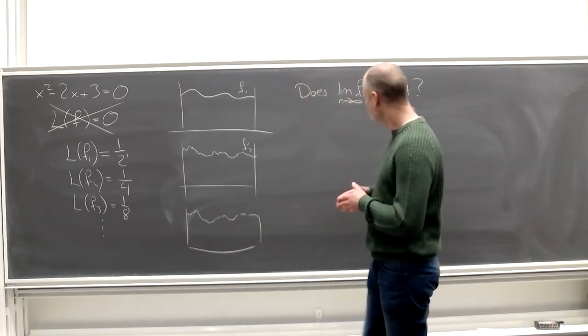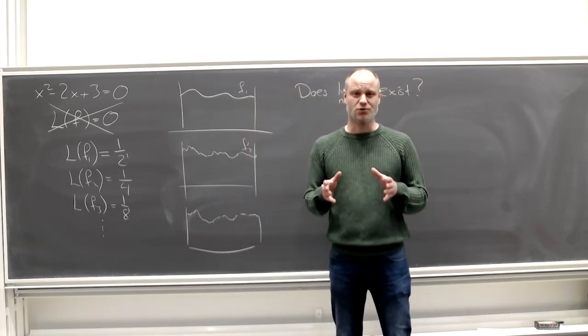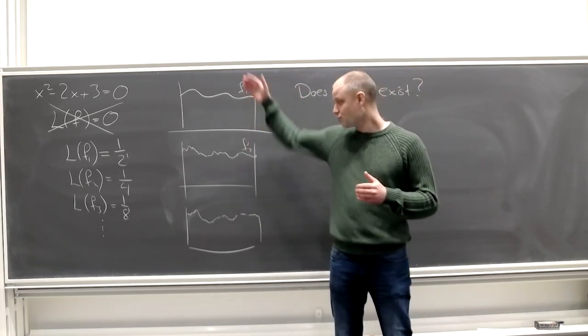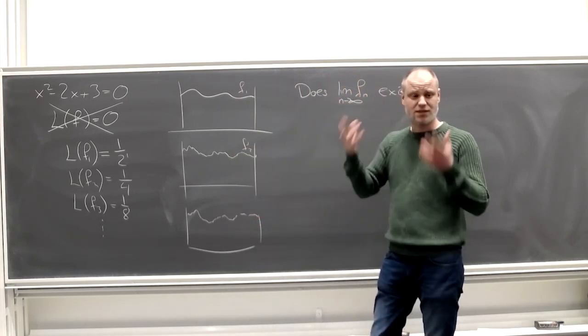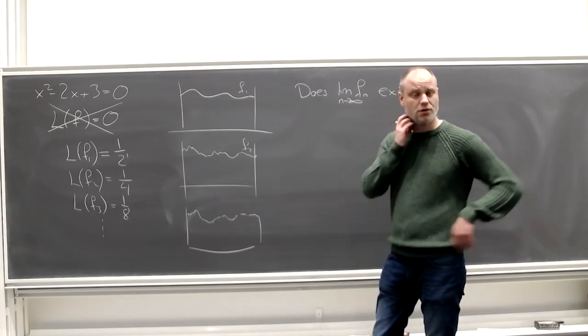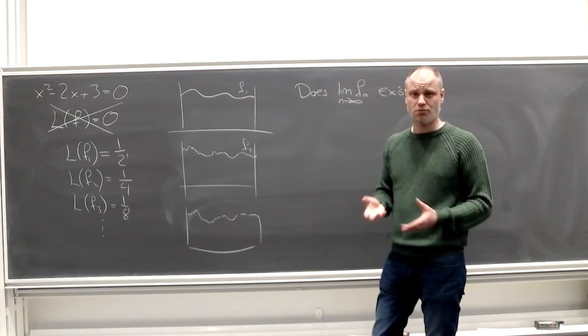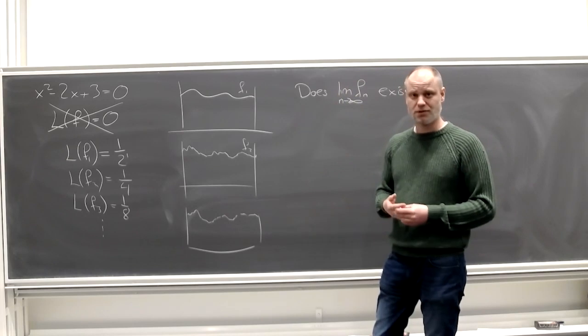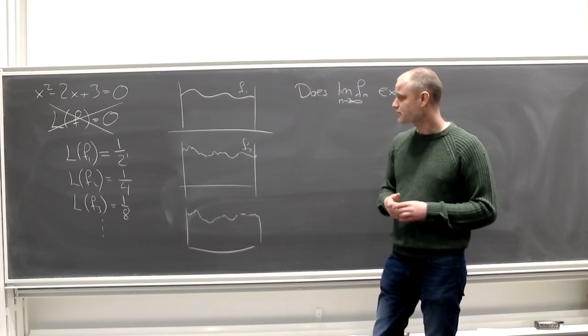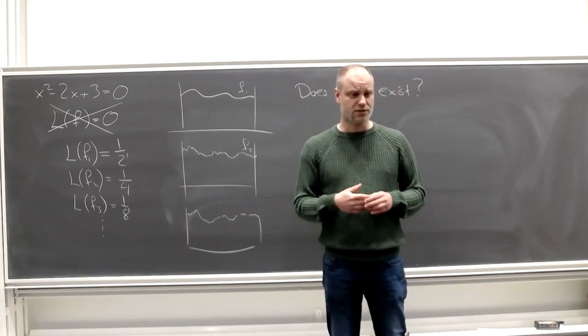The problem with the Riemann integral is that if you start with very nice integrable functions and do this process, you have no guarantee that this limit exists in an intuitive sense, like point-wise. Yet this function you obtain, it's not integrable. And then the whole thing falls apart. What sort of functions would not be integrable?